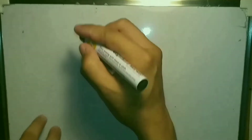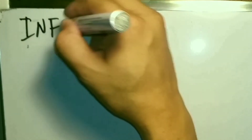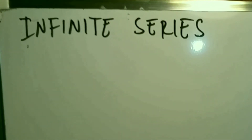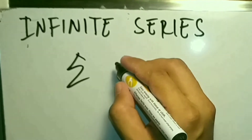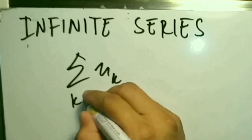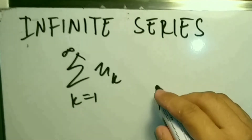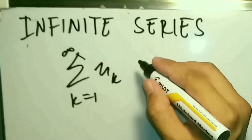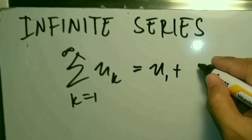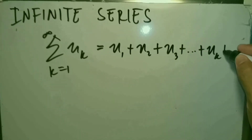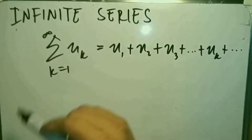We are now at infinite series. An infinite series is of the form summation of u_k where k goes from 1 to infinity. We can expand this series as u1 plus u2 plus u3 plus up to u_k, then dot dot dot since we have infinity here.